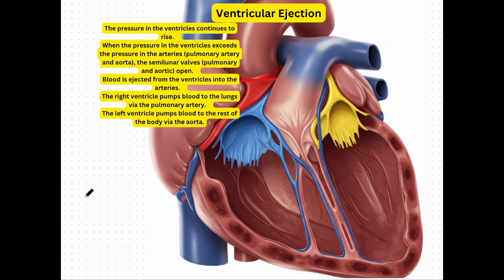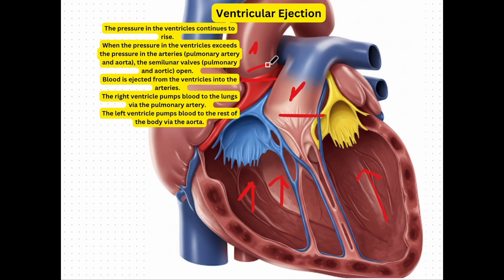Now we're in the third stage of the cardiac cycle: ventricular ejection. The pressure in the ventricles is beginning to rise. When the pressure in the ventricles is higher than the pressure in the pulmonary artery and the aorta, the semilunar valves — the pulmonary and aortic valves — begin to open. Blood will then be ejected into both the pulmonary artery and the aorta; the pulmonary artery brings that blood to the lungs, and the aorta brings it to the body.